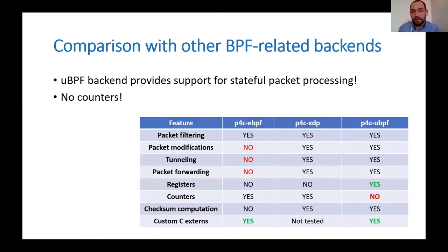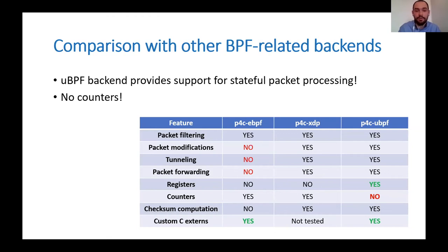As a summary, I'd like to present a comparison between different eBPF-related backends. Starting from eBPF, it's the most limited — just a packet filter. P4C-XDP goes further and implements more advanced features like packet modifications, tunneling, and packet forwarding. Our uBPF backend inherits most of these functionalities. What is really unique is that we do provide support for P4 registers. However, we didn't implement support for counters yet — this is still work to be done.